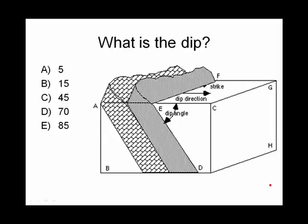What is the dip of this rock? Well, here's the dip angle. It's certainly not 5. That would be a very shallow dip, and it's not 15. 85 would be almost vertical, so you really have to decide between 45 and 70.